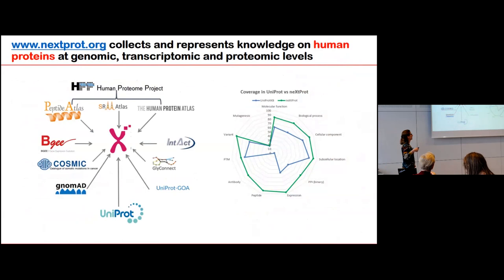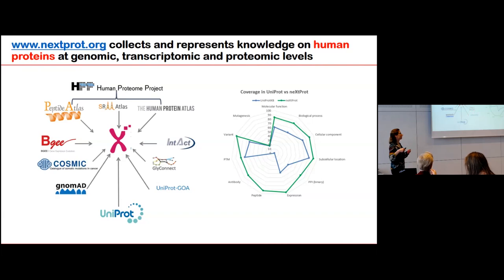We add variants and their frequencies from gnomAD or from COSMIC, a cancer mutation database. We take transcriptomic information re-analyzed by another SIB group in Lausanne called BG, and we take proteomic data from PeptideAtlas, antibody-based data from the Human Protein Atlas, and also some PTM data — for example glycosylation data analyzed by GlyConnect, also a SIB group. Because we add all this information on top of UniProt, we have better coverage for protein-protein interactions, expression data, PTMs, and mass spectrometry peptide data.